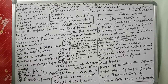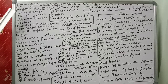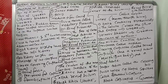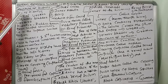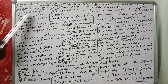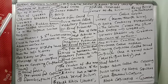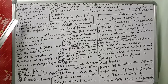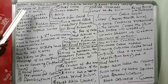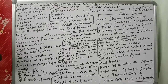Today we are going to discuss about the human excretory system, specifically the structure of the kidney. The excretory system in humans consists of a pair of kidneys, a pair of ureters, a urinary bladder, and a urethra.